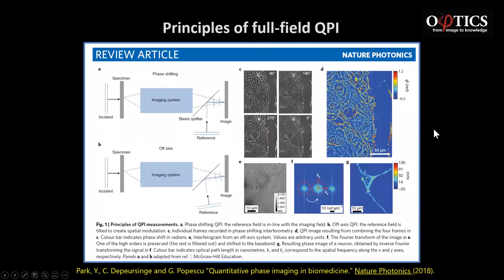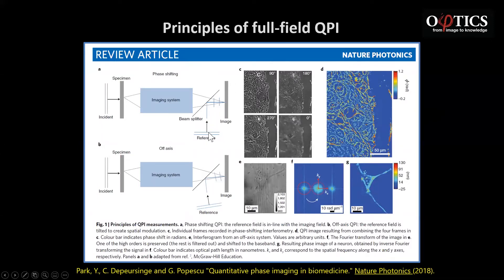This is a quick classification of the different geometries you can use to produce QPI. One is phase shifting. In this case you have an image produced by a microscope. The reference field with which you do interference is parallel to the imaging field. You modulate the delay of the reference, collect usually four frames, combine them, and you get a beautiful image which is quantitative as you can tell from the color bar.